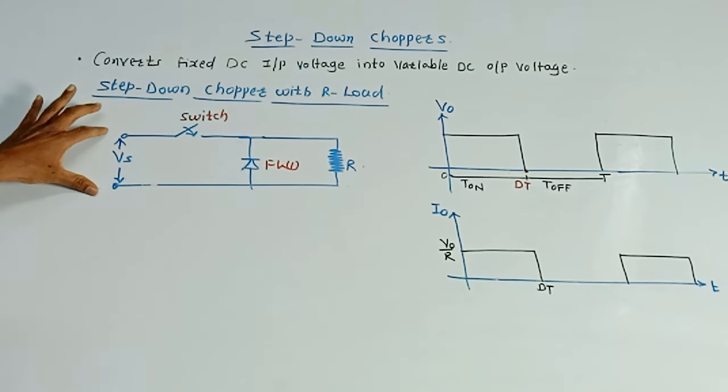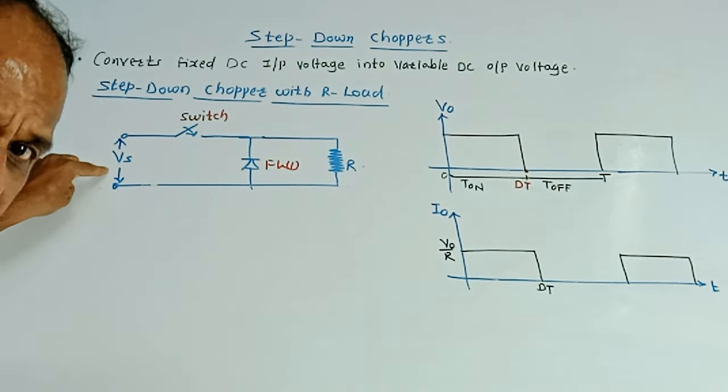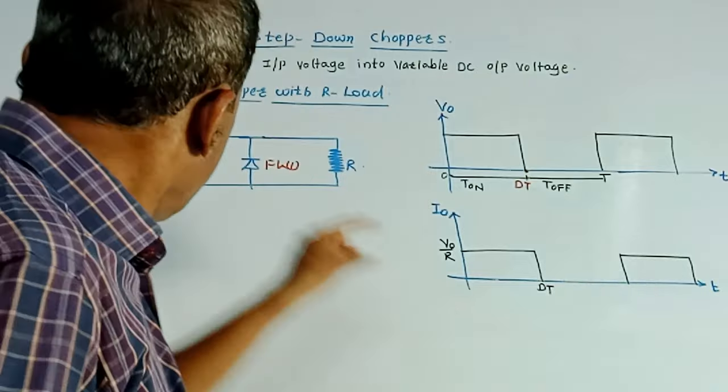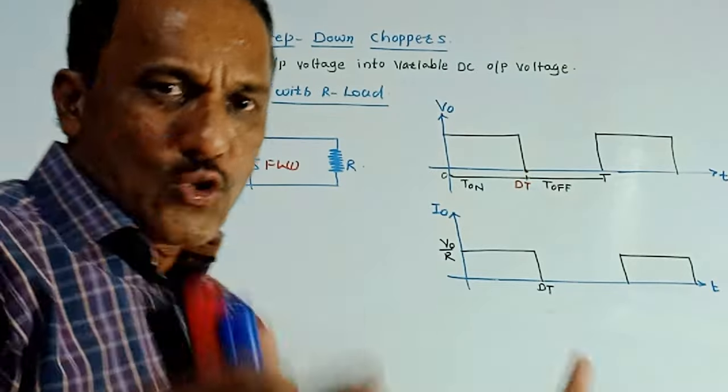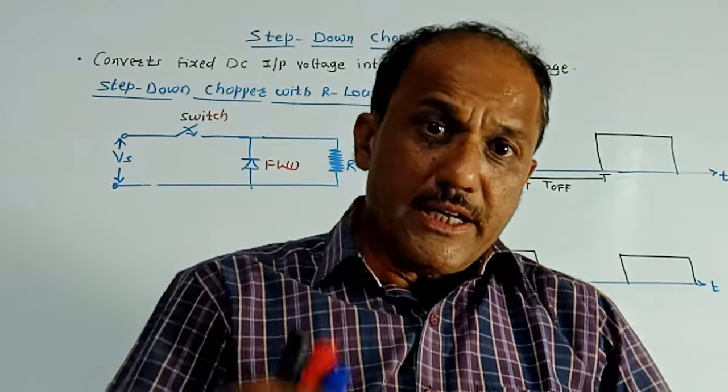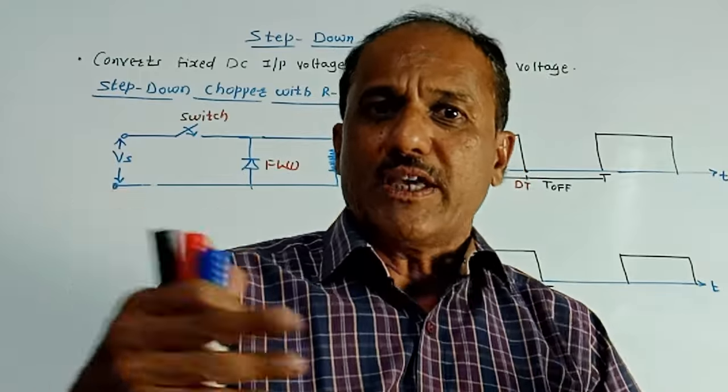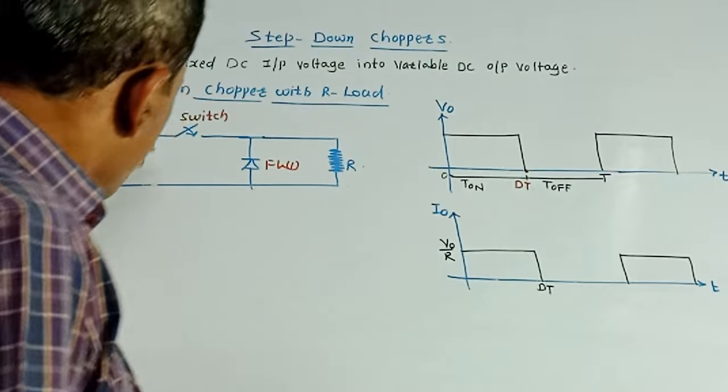At the input side, we are applying, this is the corresponding circuit diagram. At the input side, we are applying Vs, that is we are connecting DC input voltage. This is the switch. We can make use of any device, any power device which will act as a switch. For example, we can use power transistor. So this is the switch.